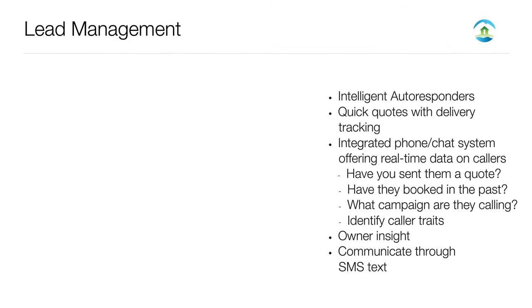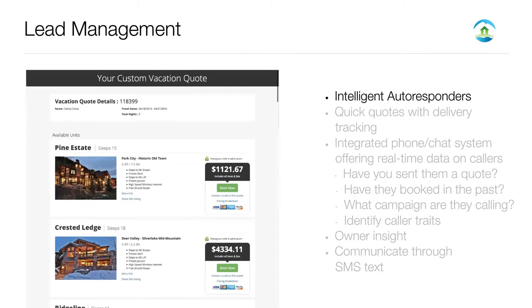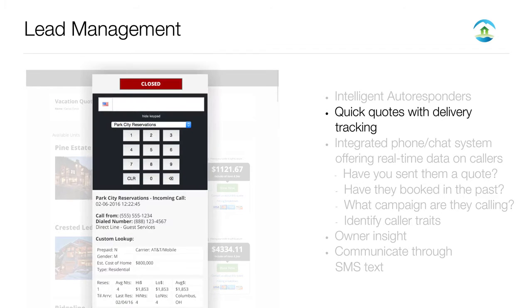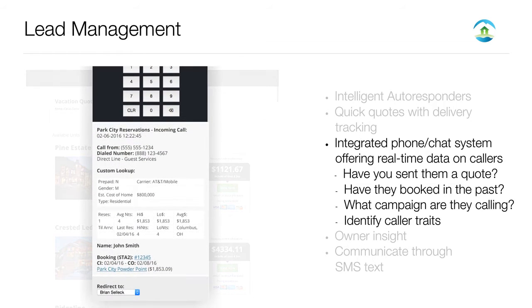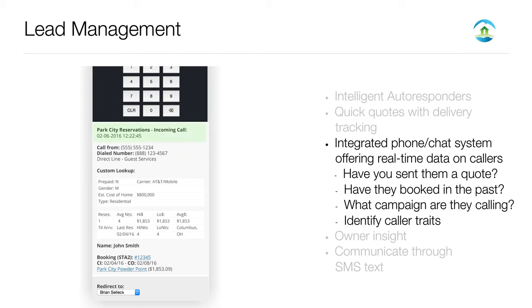Lead management is critical to the success of your business. We offer intelligent autoresponders. Our quotes are built to convert while tracking when they were opened. Utilize prior guest data with our integrated phone chat system. Answer the questions you want to know before speaking with the guest: Does the caller already have a quote in Streamline? Has the caller made reservations in the past? Is this a VIP client? What campaign did they dial? We display as much information about the caller or the person trying to chat online as possible, making communication with the client personable and accurate.